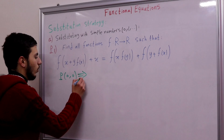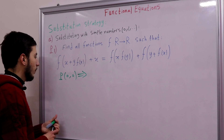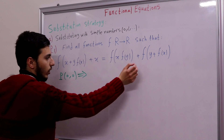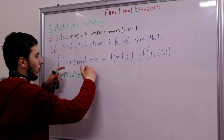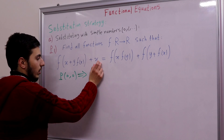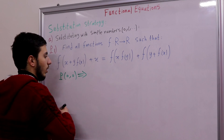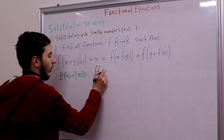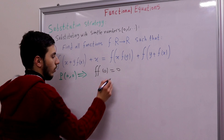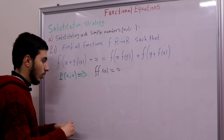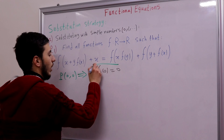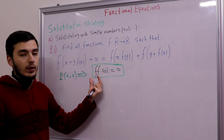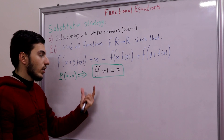Applying P(0,0): we get f(0) and f(0) on both sides, so those cancel, giving us f(f(0)) = 0. That's the first piece of information — we have evaluated the value of f(f(0)).